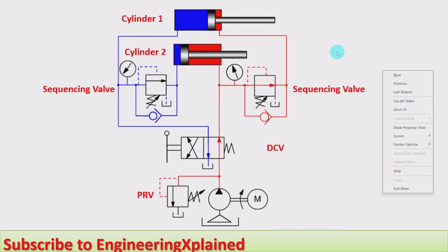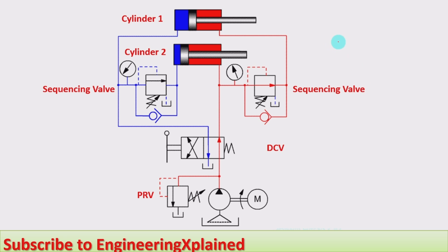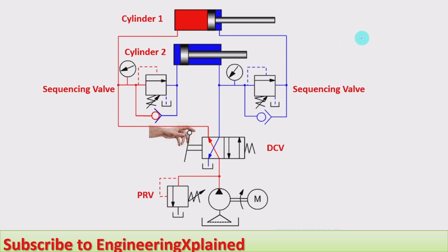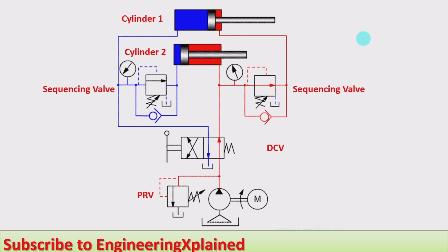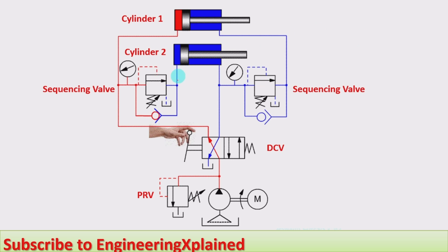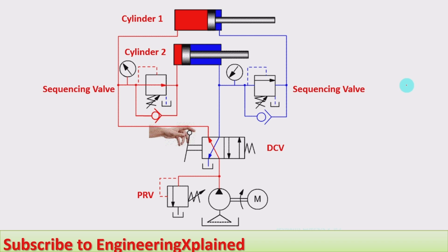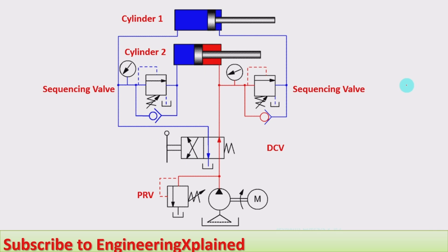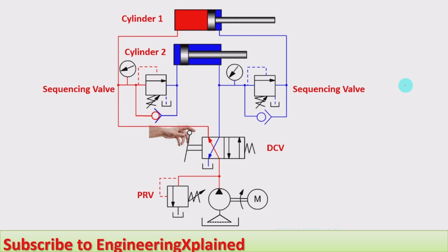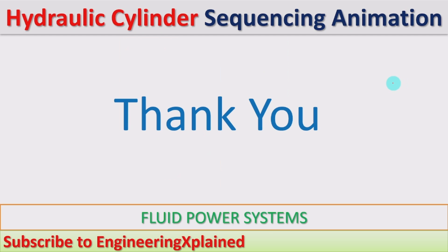This is how the extension and retraction of cylinder one and two takes place in sequence, which is why it is called sequencing of hydraulic cylinders. The sequence is: extension of cylinder one, then cylinder two, then retraction of cylinder two, then cylinder one. This sequential actuation can be used in different applications where one-after-the-other cylinder extension is required. Thanks for watching — please like, share, subscribe, and comment.